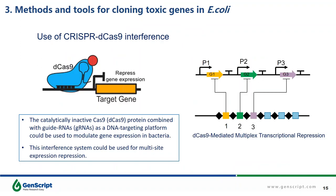You can also use CRISPR-dCas9 interference. The inactive Cas9 — called dCas9 — combined with guide RNA as a DNA targeting platform, can be used to modulate gene expression in bacteria. This interference system could be used for multi-site gene expression repression. If several toxic genes are simultaneously expressed, you can try this method.